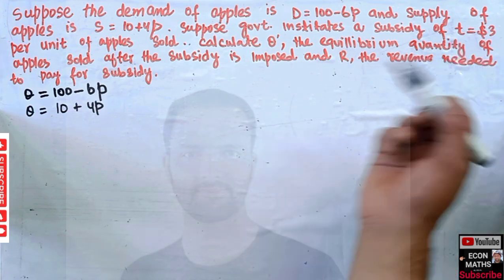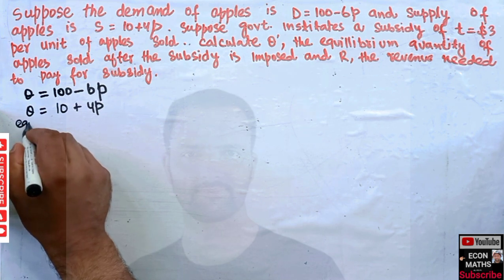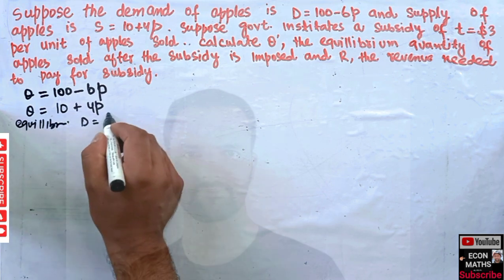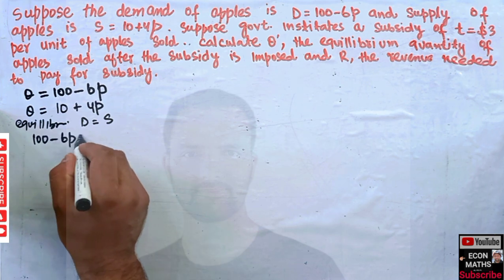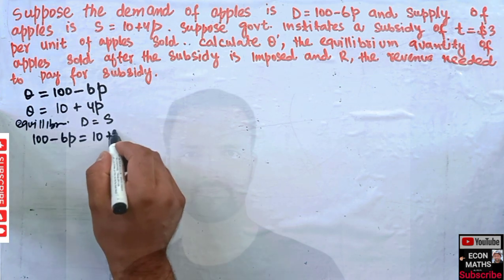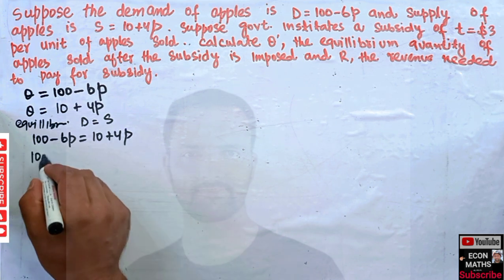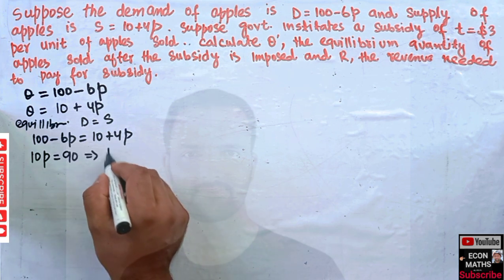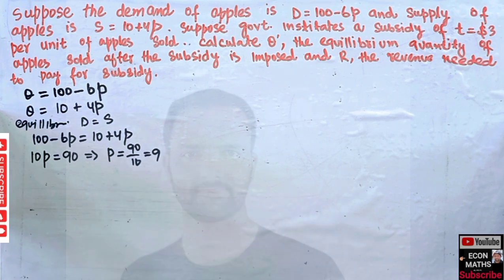Now, what is the equilibrium before the per unit subsidy? We equate demand and supply. At equilibrium: 100 − 6P = 10 + 4P. Transposing gives 6P + 4P = 100 − 10, so 10P = 90, which implies P = 9.